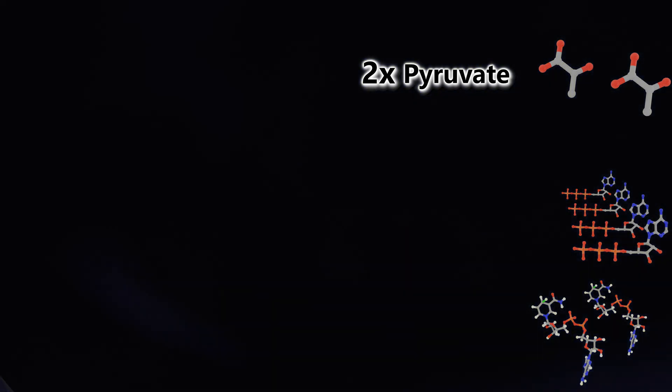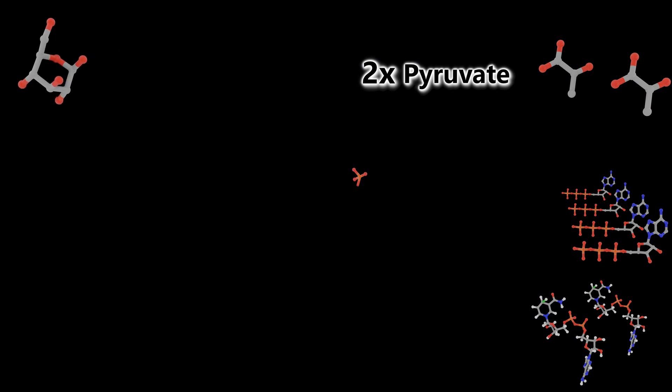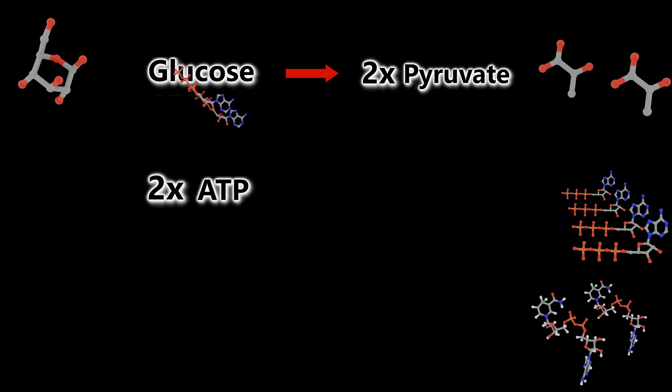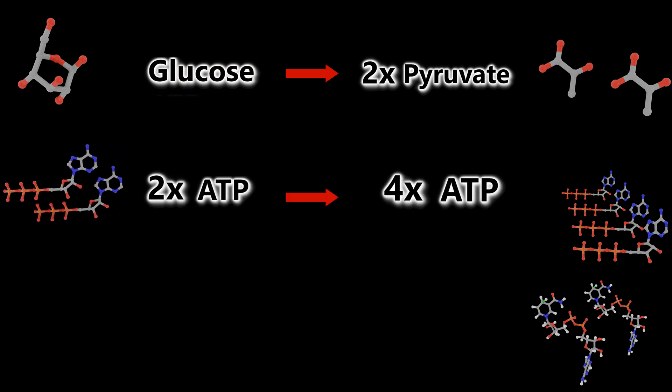In summary, the entire glycolysis process took one glucose molecule and split it into two pyruvate molecules. It also took two ATP to be consumed and produced four total ATP with a net of two ATP.